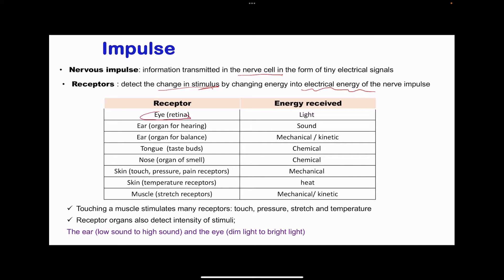Other examples of receptors include the eyes, which respond to light. The ears can respond to sound as well as to mechanical or kinetic energy. The tongue has taste buds that detect chemical stimulation or chemicals in food. The nose detects smell, which is a chemical signal. The skin is sensitive to mechanical changes and heat changes. Muscles have stretch receptors and are sensitive to mechanical as well as kinetic changes.